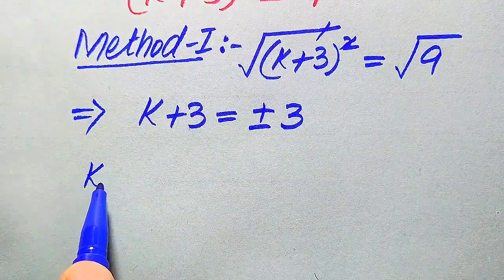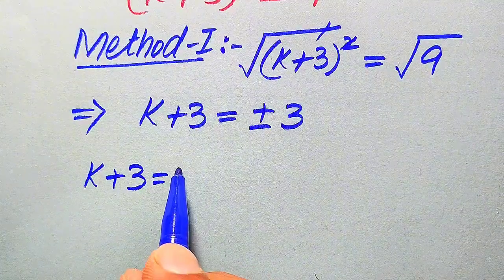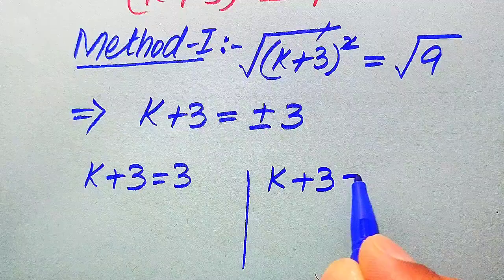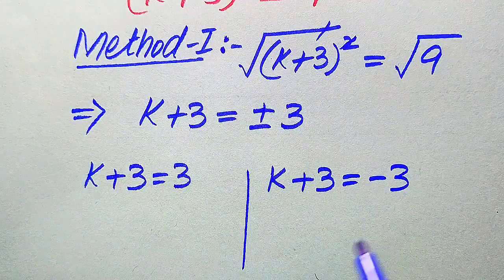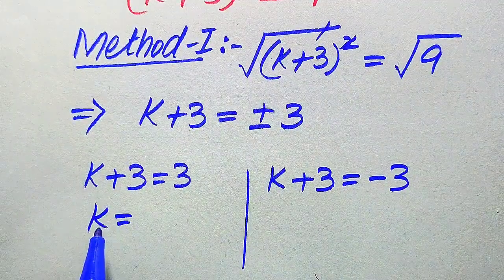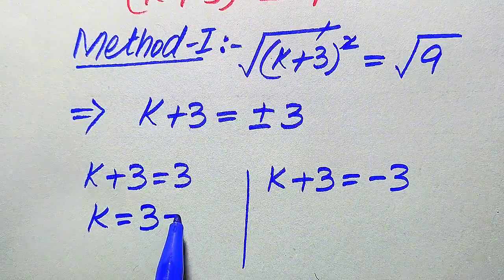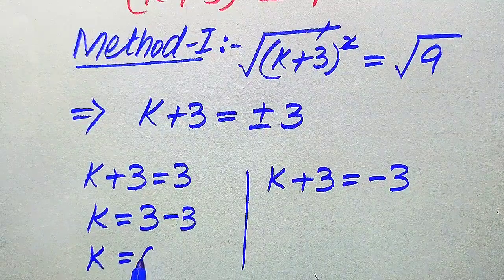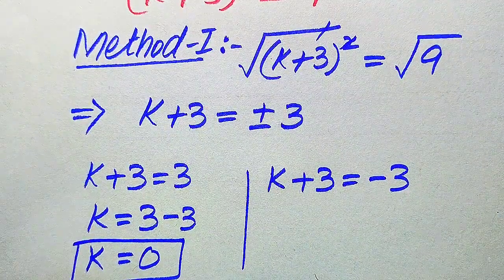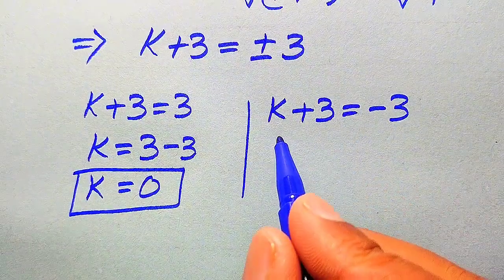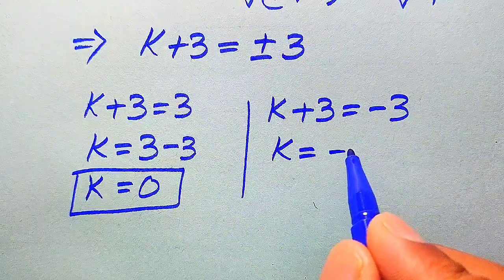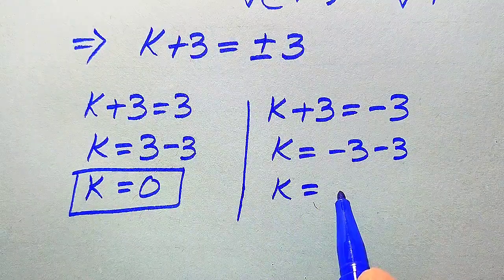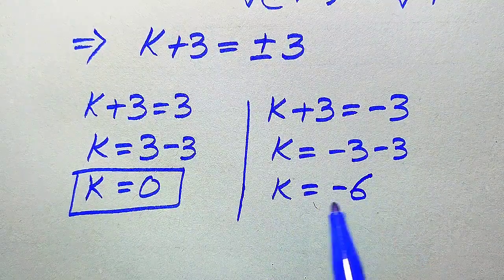In the next step we break this into two cases. The first case is k + 3 = +3, and the second case is k + 3 = -3. From the first case, moving 3 to the right-hand side gives us k = 0. From the second case, moving 3 to the right-hand side gives us k = -3 - 3 = -6.